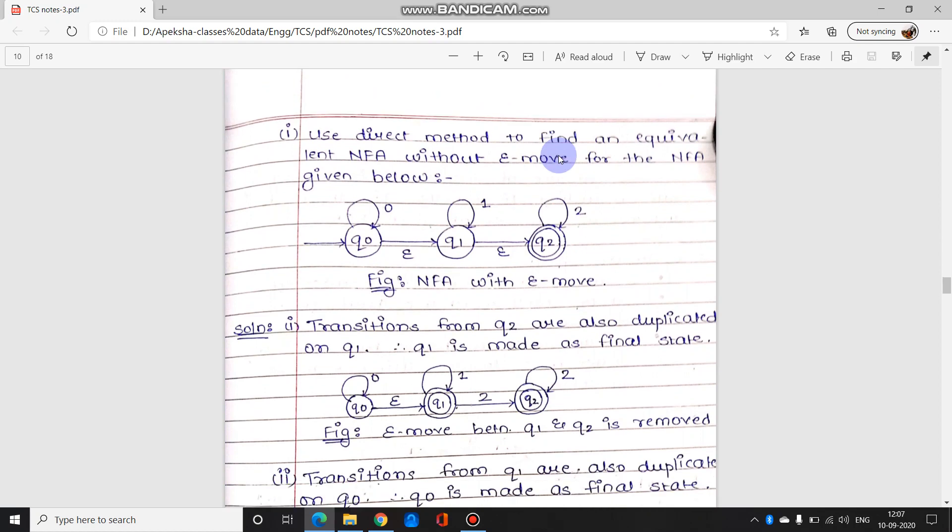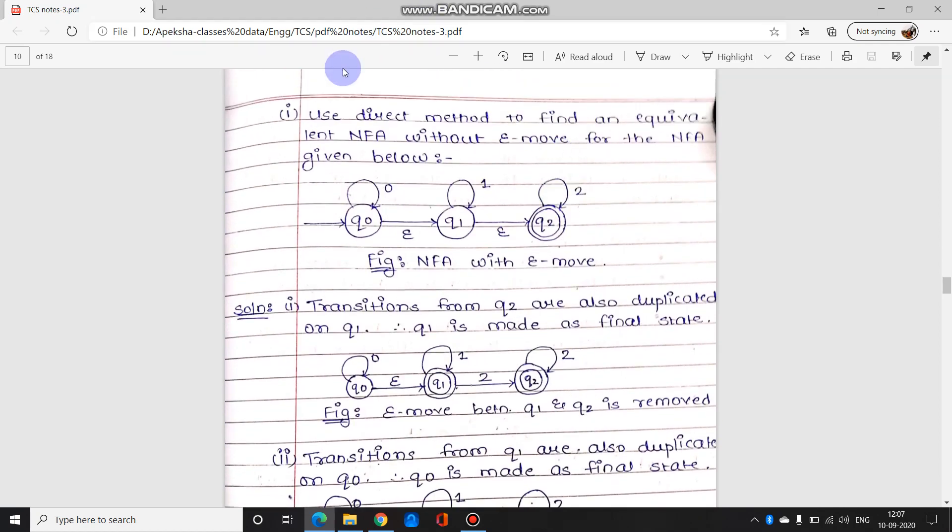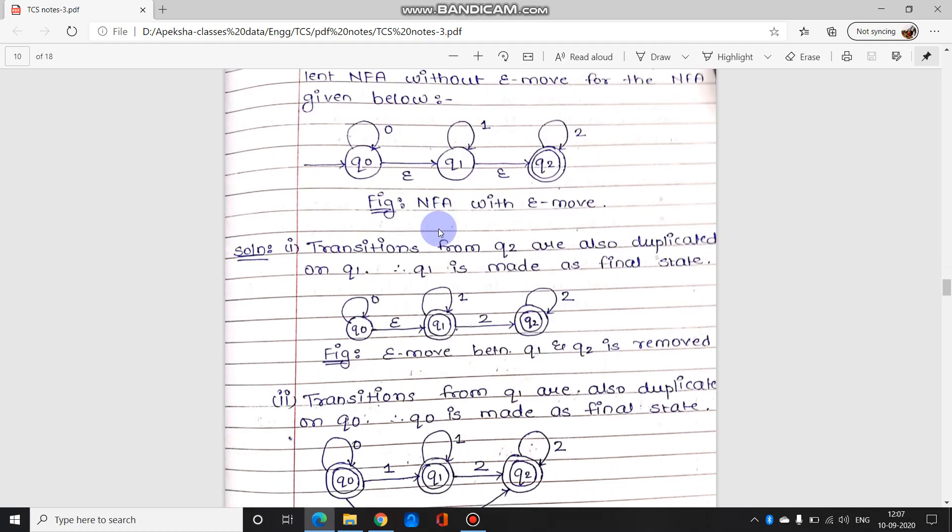Let us see kaise solve karna hai. It says use direct method to find an equivalent NFA without epsilon moves for the NFA given below. Yeh raha, yeh normal NFA diya hua hai. Iska equivalent NFA banana hai without any epsilon moves. So here we have three states QI, QJ, and QK. So to avoid confusion I'll just call normal states Q0, Q1, and Q2. So it says ki agar 2 states hai QI and QJ, then QJ ka har ek move duplicate hooncha yeh QI pe. So abhi pas filhaal teen state hai, toh hum ulta start karenge, hum pehle Q1, Q2 ke state start karenge and then Q0, Q1 se start karenge that will be easier.